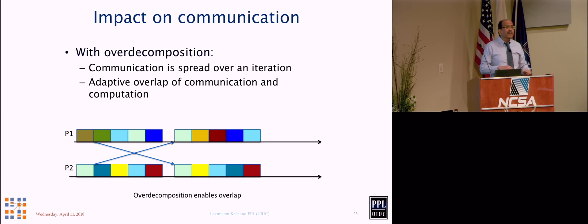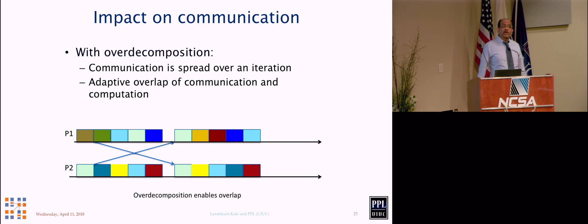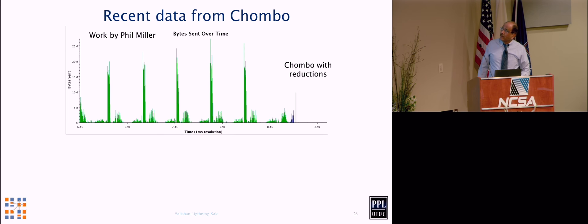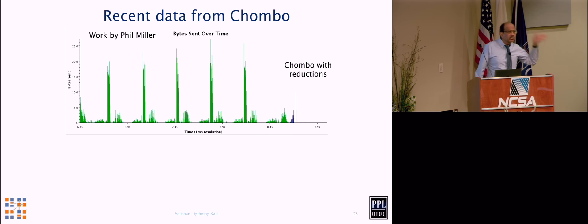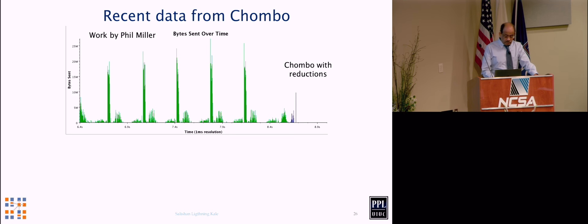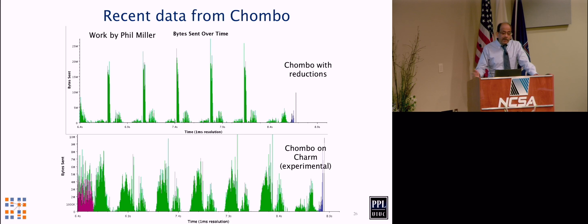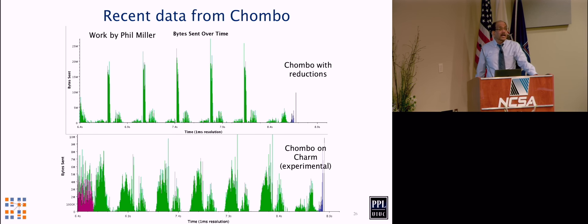Otherwise you use the communication network for a short period of time and then run to the vendor saying you need a faster network — because you're only using it 20% of the time and want maximum speed during that 20%. A study by Phil Miller in his thesis looked at Chambo: the x-axis is time, the y-axis is data injected per millisecond — peaks of around 25 to 30 megabytes per node. An experimental version of Chambo with CHARM++ managed to improve that situation: multiple units inject data at multiple times, spreading out the injection, and as a result the peaks are much, much reduced.